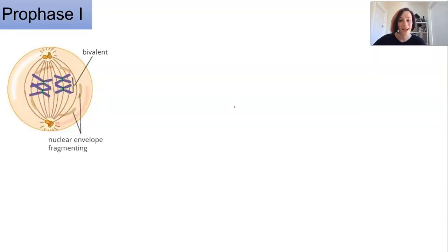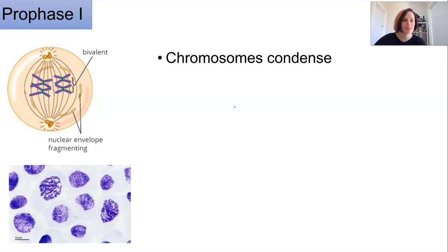At prophase 1 the chromosomes condense and they start to become visible and we can see in this cell there are kind of two homologous pairs here and we can assume that one of each of those pairs is inherited maternally and one is paternally.